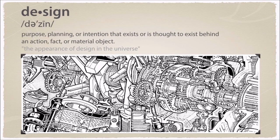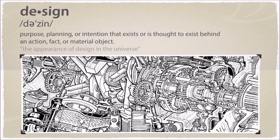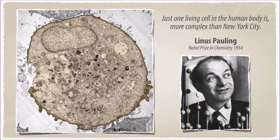When we see complex interworkings like this, we're often referred to as design — for example, in the cellular machines that we see on a very small biological scale. Linus Pauling, the Nobel Prize winner in chemistry, once said that just one living cell in the human body is more complex than New York City. This is a fact that is staggering for us to wrap our minds around, because of the very small microscopic scale of the cells, and then understanding that there's so much rich complexity there with biological machines and things.